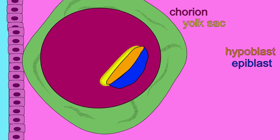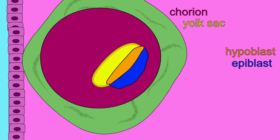Around day eight, cells of the hypoblast contribute to the formation of the extraembryonic membrane known as the yolk sac.